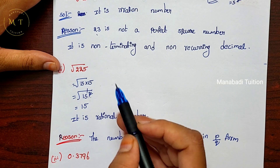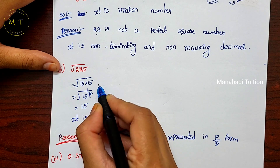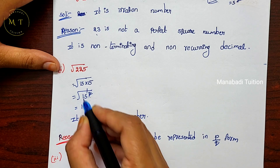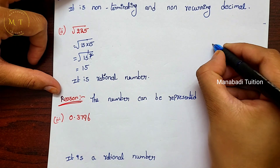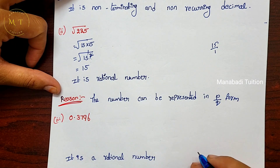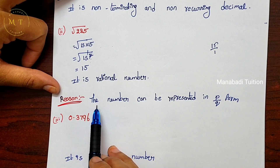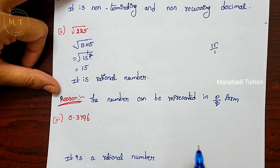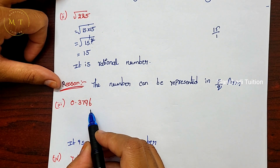Second number: √225. Now 225 = 15 × 15, so √225 = 15. We can write this as 15 by 1, which is in p by q form. Therefore √225 is a rational number. Third number: 0.3796... — this decimal is non-terminating and non-recurring.